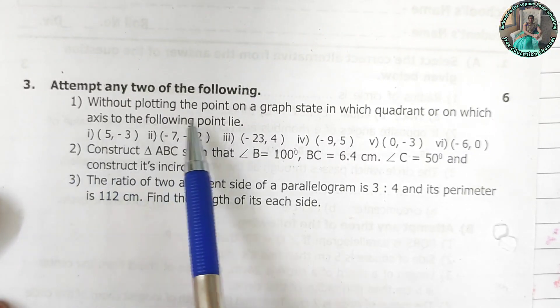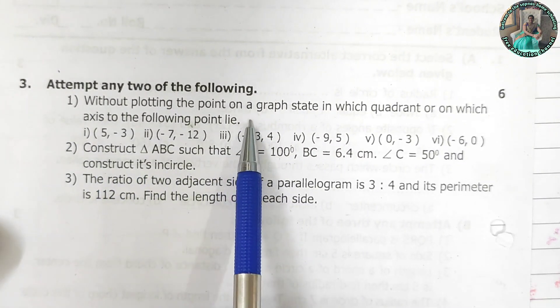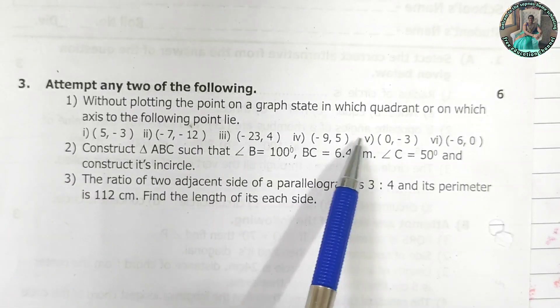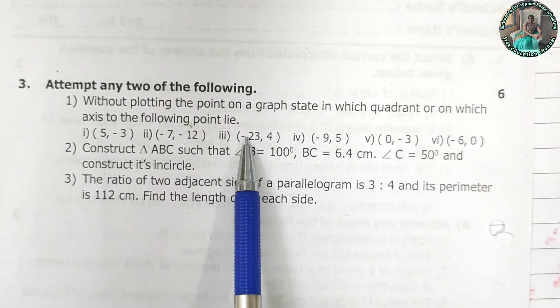Question 3. Attempt any 2 of the following. Without plotting the point on the graph state in which quadrant or on which axis to the following point lie.